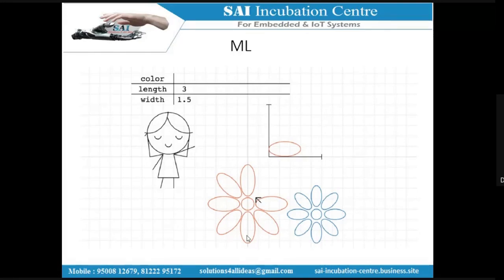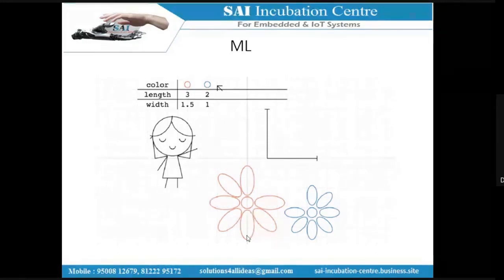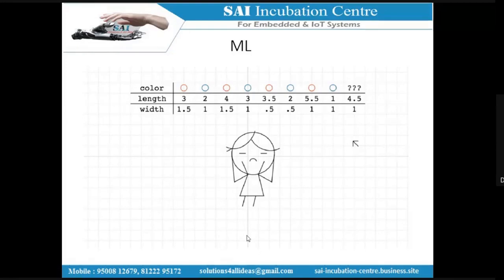She slowly plucks each petal, measures length and width with a scale, identifies the color, and plots every data point in the table. But accidentally, she loses one petal. She noted the width and length but forgot to note the color of that particular petal. So now, how do we approach this problem?